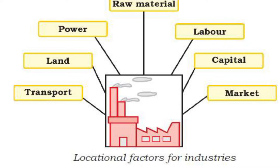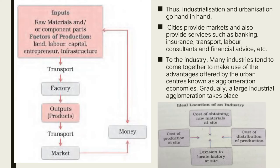We need to learn this diagram. The inputs are land, labor, capital, and entrepreneurship. Infrastructure includes transport, communication, factory, water, electricity, and market area — all available to the factory. The factory gives output: finished products move to the market and money is received in exchange. All these factors must exist together. This diagram shows the relationship between inputs and outputs for industrial production.